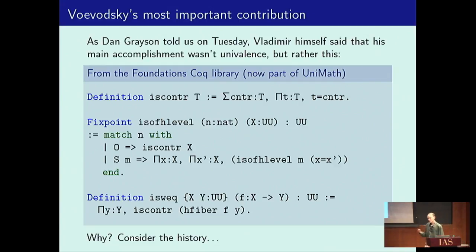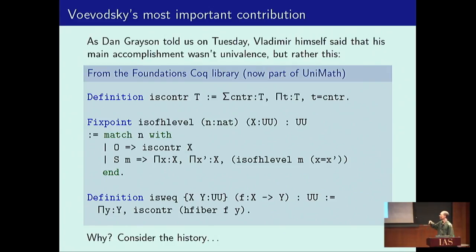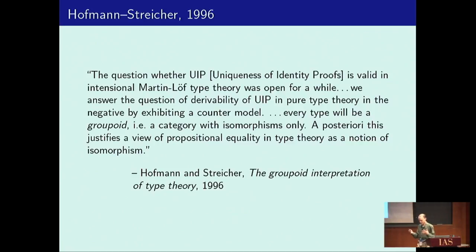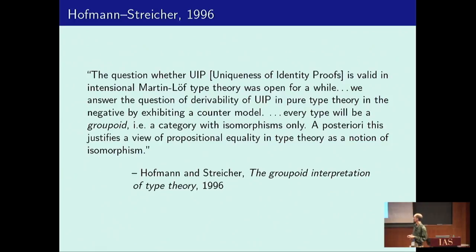To try to explain that, let me go back and go over a little bit of history — where things were at the point when Vladimir did this. The univalent or homotopy interpretation of type theory and higher categorical type theory really goes back more than 20 years to Hofmann and Streicher's paper on the groupoid interpretation.